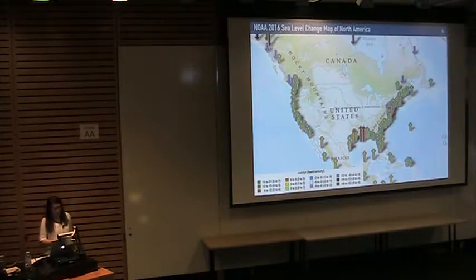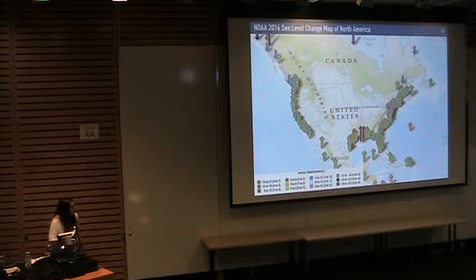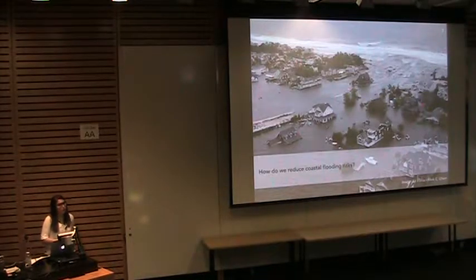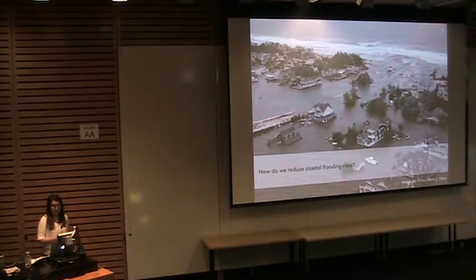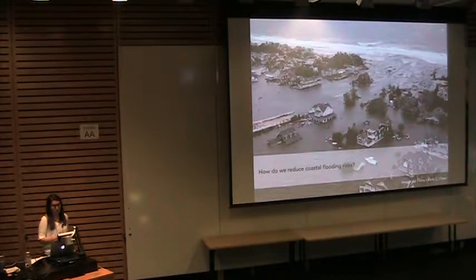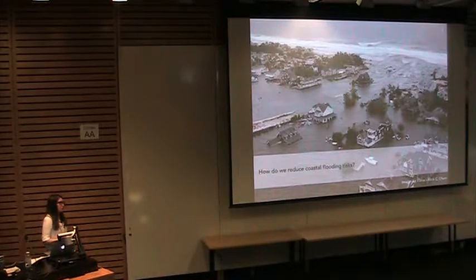When we look at the North American context, we see that sea levels have been increasing in pretty much all around North America, particularly in heavily populated areas. We know that climate change impacts are increasing and particularly the increase in sea levels is expected to amplify the existing coastal flooding risks and coastal erosion risks, and will also impact the associated vulnerabilities in coastal areas. But how do we reduce coastal flooding risks?